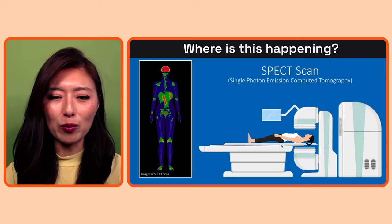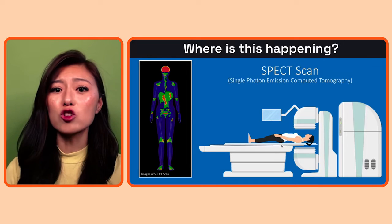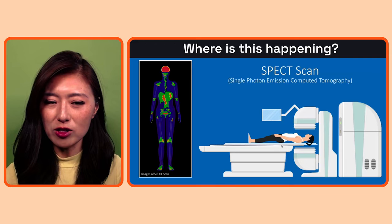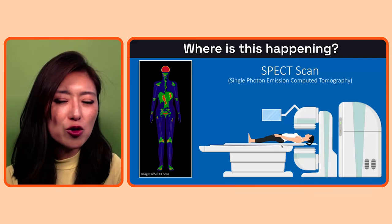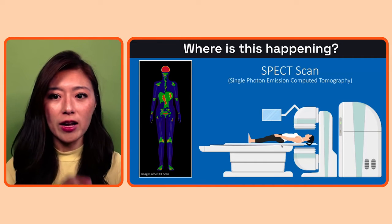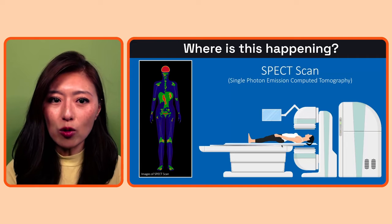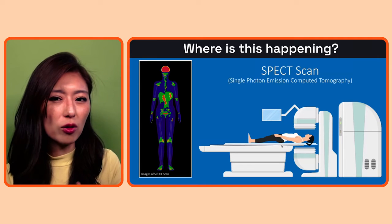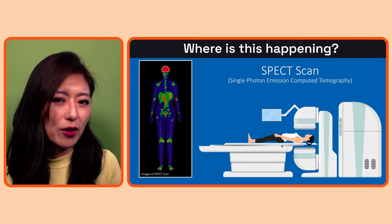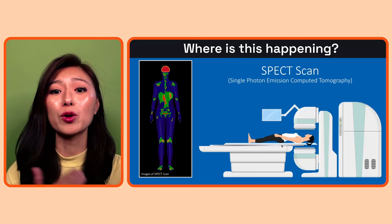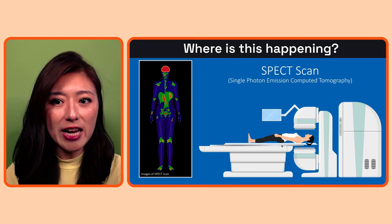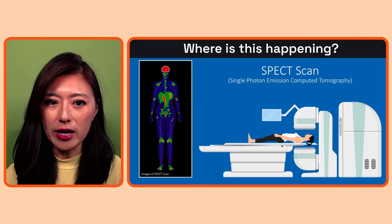To figure out the source of the bleeding, the doctor could tag your red blood cells with tracers and visualize how the blood travels throughout your body. At the source of the bleeding, a blood clot will likely form around it. Therefore, the doctor could look for an accumulation of tracers under a scan to find the source of the bleeding.